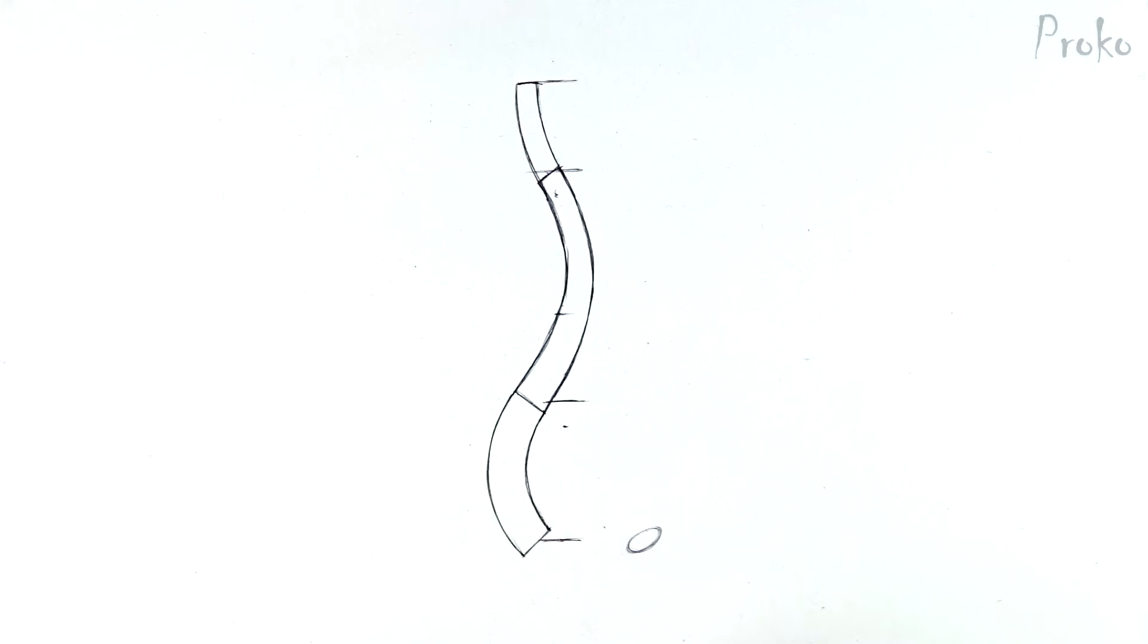The bottom of the lumbar section points forward, like this. So, the angle of the ellipse will be perpendicular to that. Draw the length of the cylinder with the forward curve. And now, the ellipse for the top cap will angle this way, because the cap points backward.